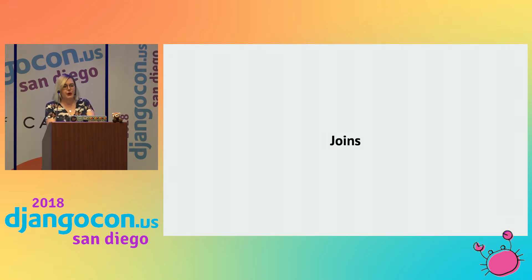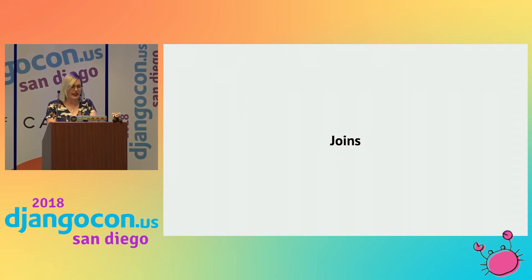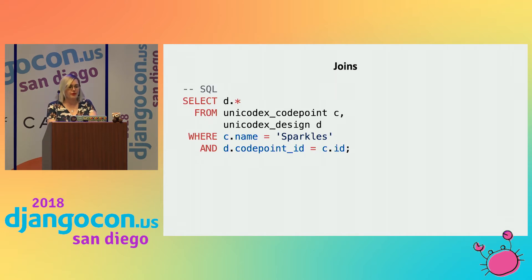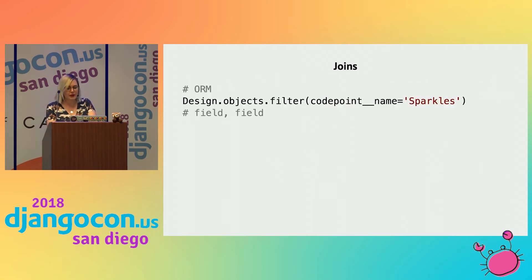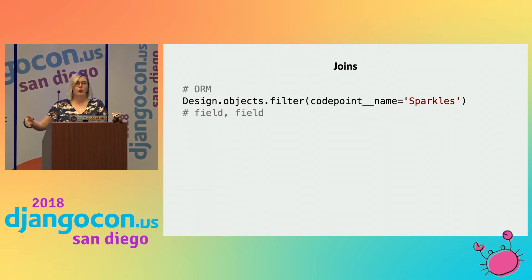Now that we've covered the basics, this is where joins come in. Anyone who has done any SQL for any amount of time has had countless interactions with inner joins, outer joins, and all the rest — and it can get a bit confusing. But thankfully, the ORM makes this really easy and you don't have to remember all that stuff. If I wanted to do a join on my CodePoint and Design table on a foreign key, instead of writing all that SQL, I just filter on something a little more complicated: I filter on `code_point__name__exact=sparkles`. Django knows what we're talking about — we separate fields by double underscores and Django handles the join.